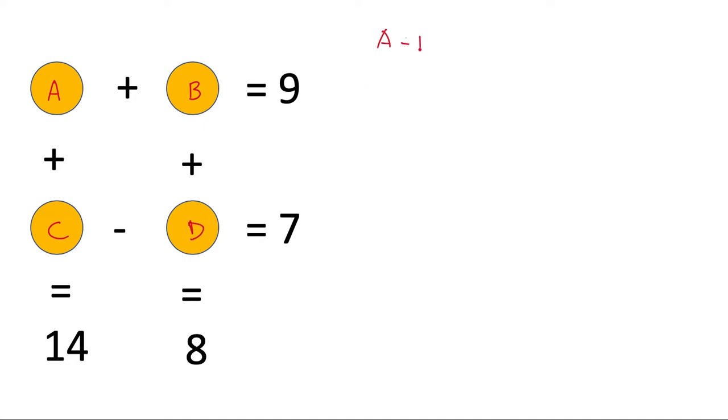So here a plus b is 9, a plus c which is this plus this is 14, then b plus d is 8, and c minus d is 7. Now these are the four equations that I have written from this diagram.